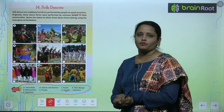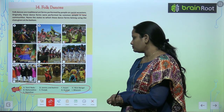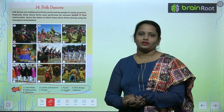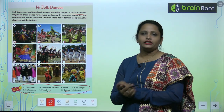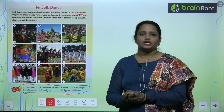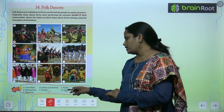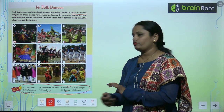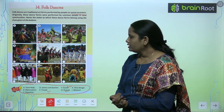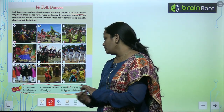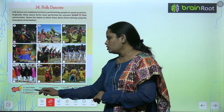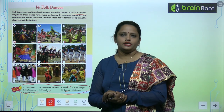The next one is Bhangra. Bhangra is a dance which is mainly famous in Punjab, so we will write here E. The next dance form we will write here F, and the following one we will write here C.